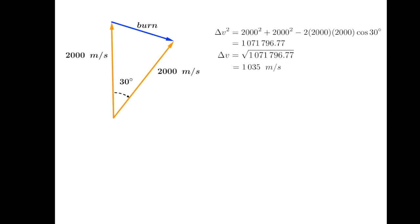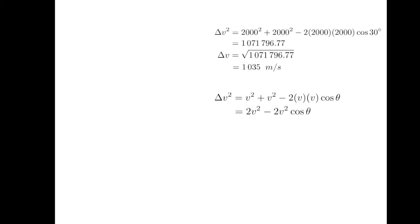This calculation is pretty easy to turn into a formula. Let's let v represent the orbital velocity and theta be the angle that we want to change our trajectory by. Substituting in and some quick simplifying gets this. An easy mistake to make here is to subtract the two 2v squareds, but that gets us zero, which is clearly wrong. That second 2v squared is part of the cosine theta term and thus can't be subtracted.